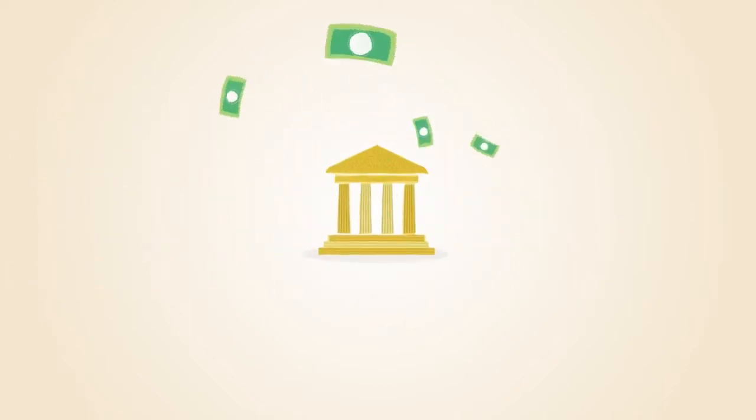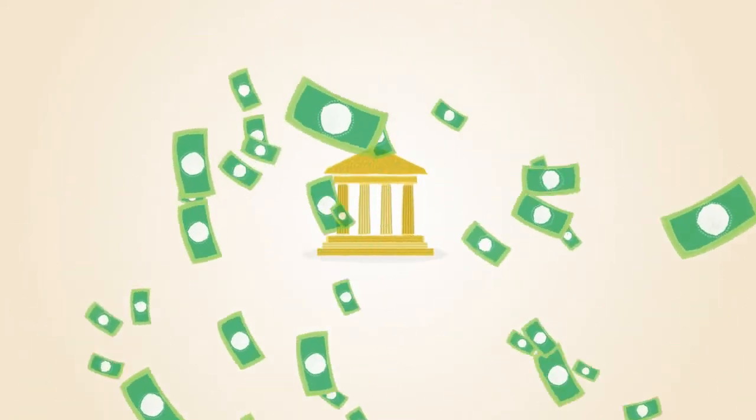With paper money, a government decides when to print and distribute money. Bitcoin doesn't have a central government.